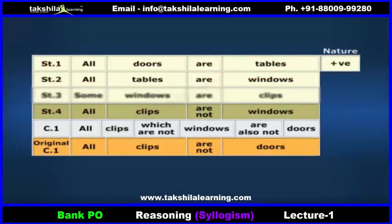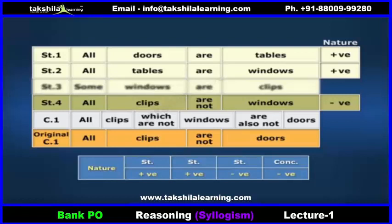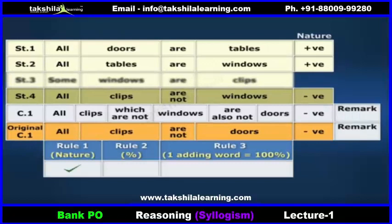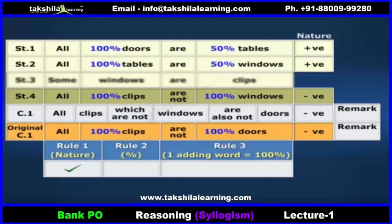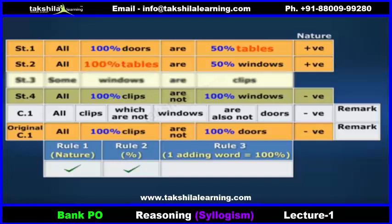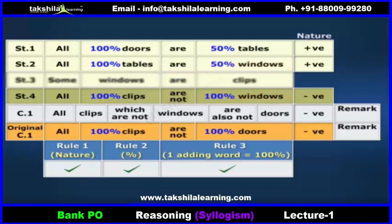Statement 1 is positive in nature, statement 2 is also positive, and statement 3 is negative in nature. So I can conclude a negative nature conclusion, and yes, it is negative in nature — so Rule 1 follows. In Rule 2, the percentage of subject and predicate is the same in the statement and conclusion, so this rule also follows. In Rule 3, the adding word 'table' is 100% in statement 2, and the adding word 'windows' in statements 2 and 4 is 100% in statement 4. So this rule also follows, and thus the conclusion is correct.